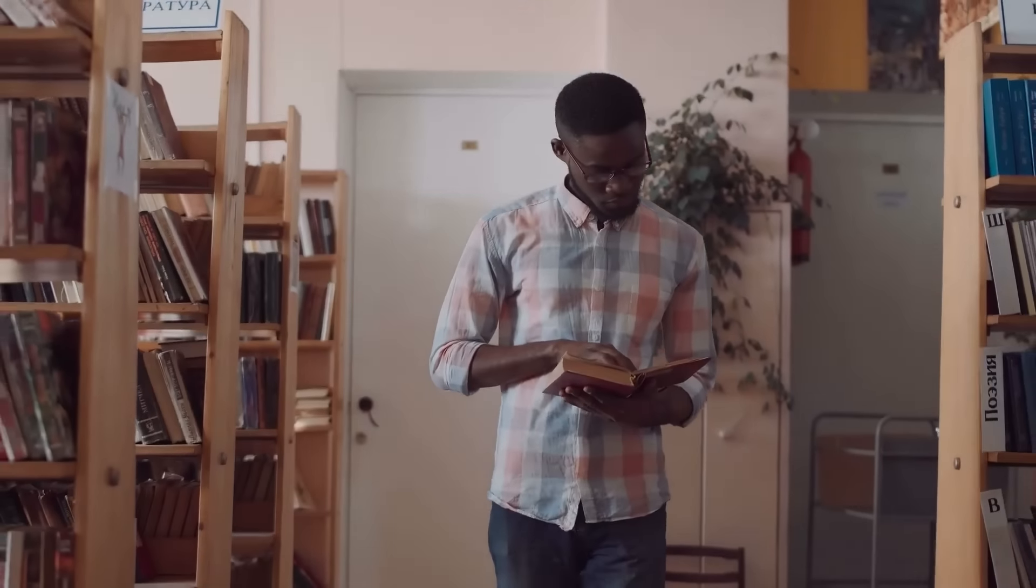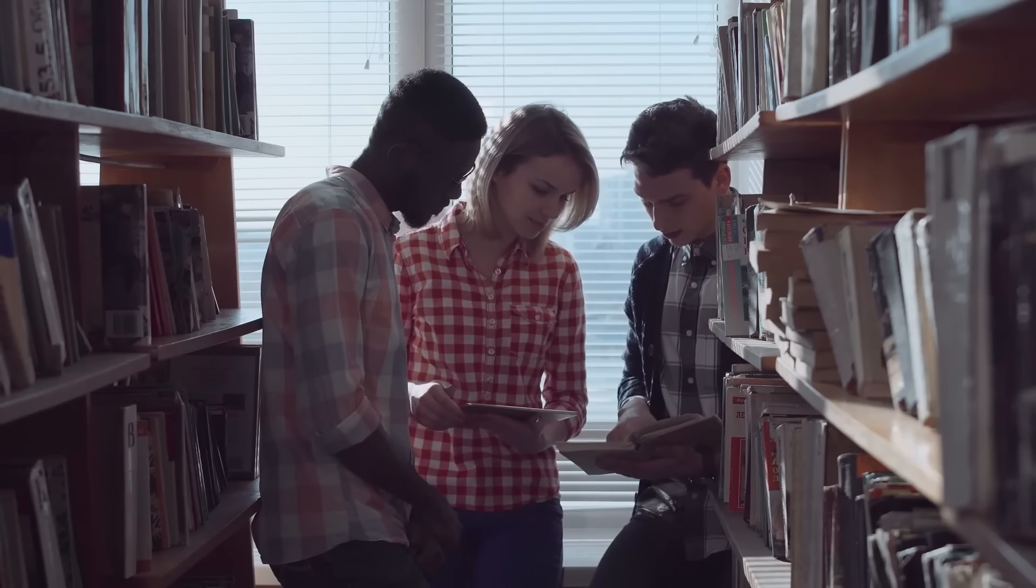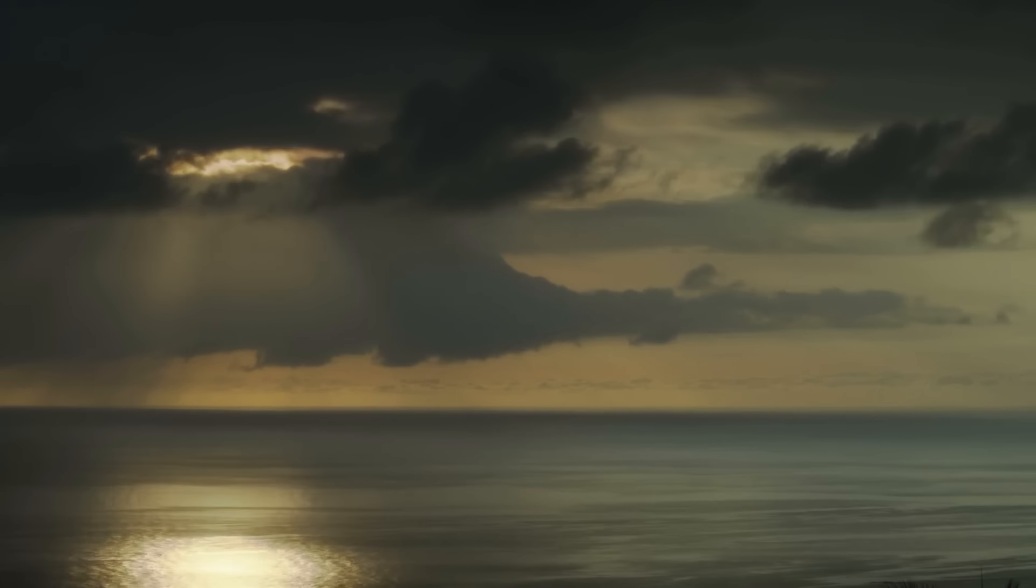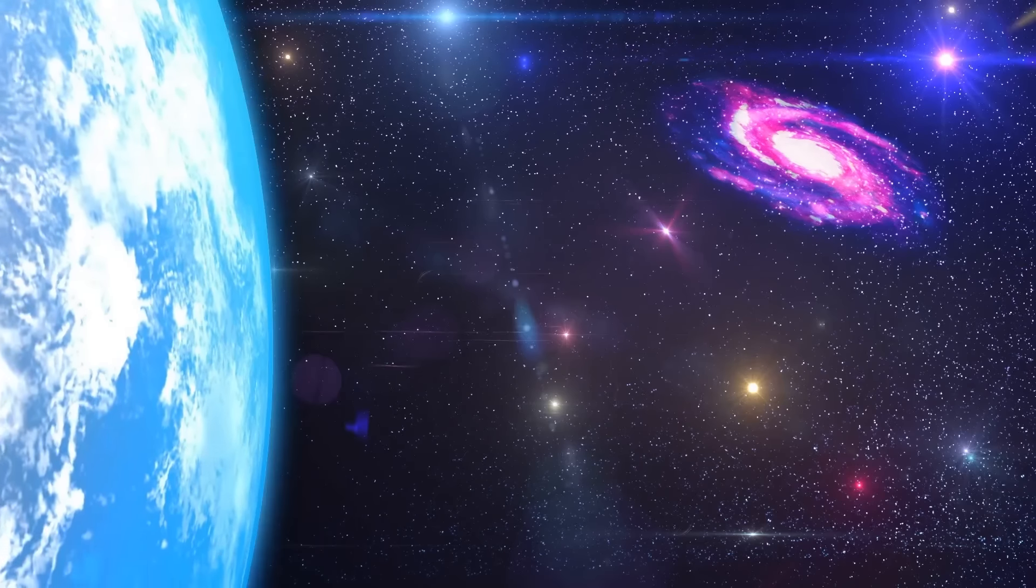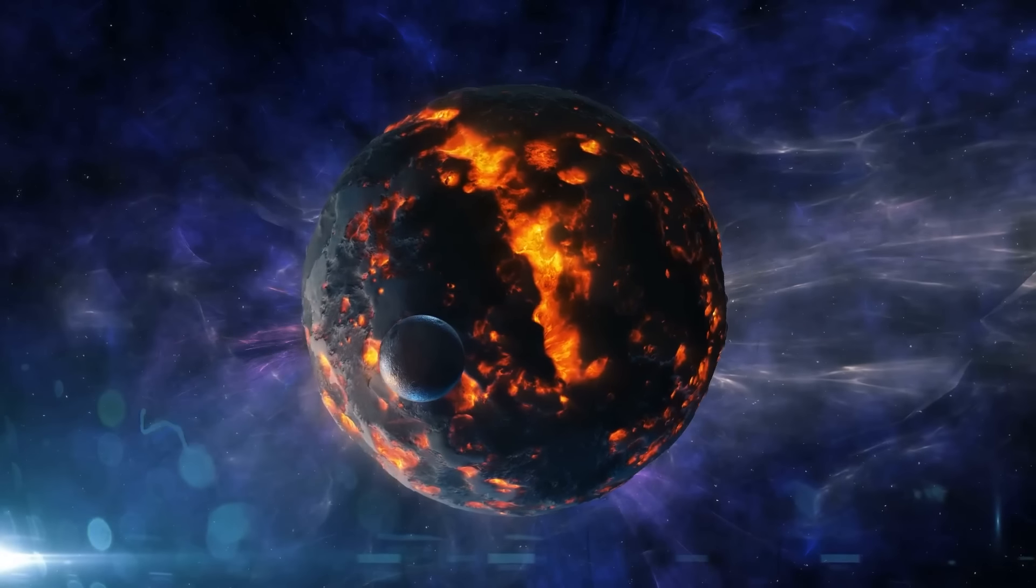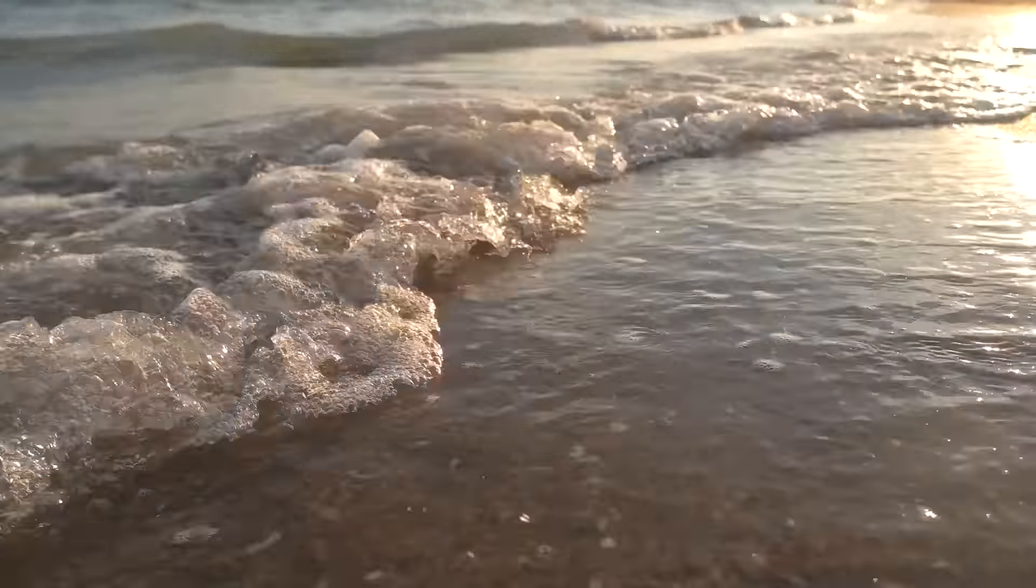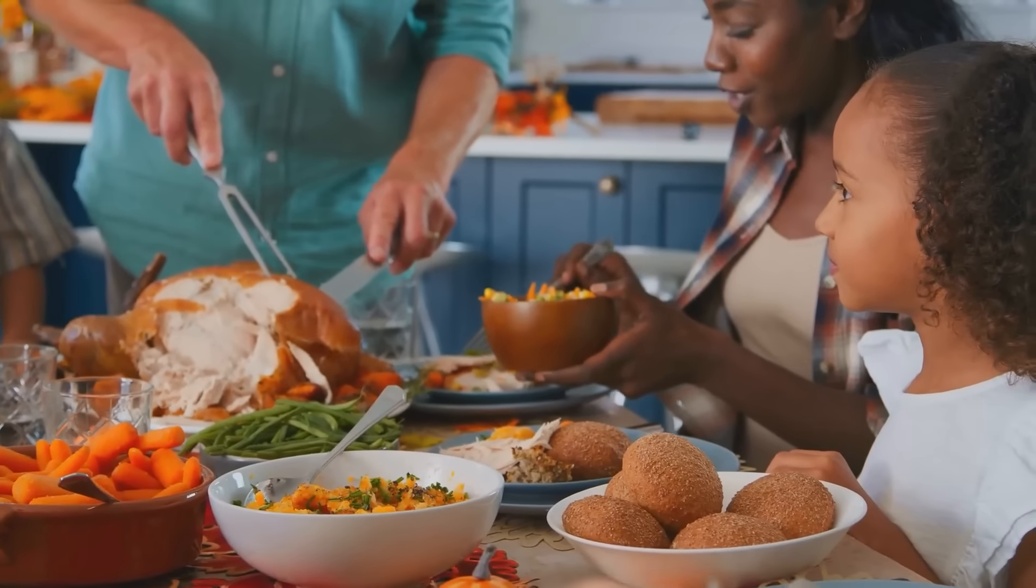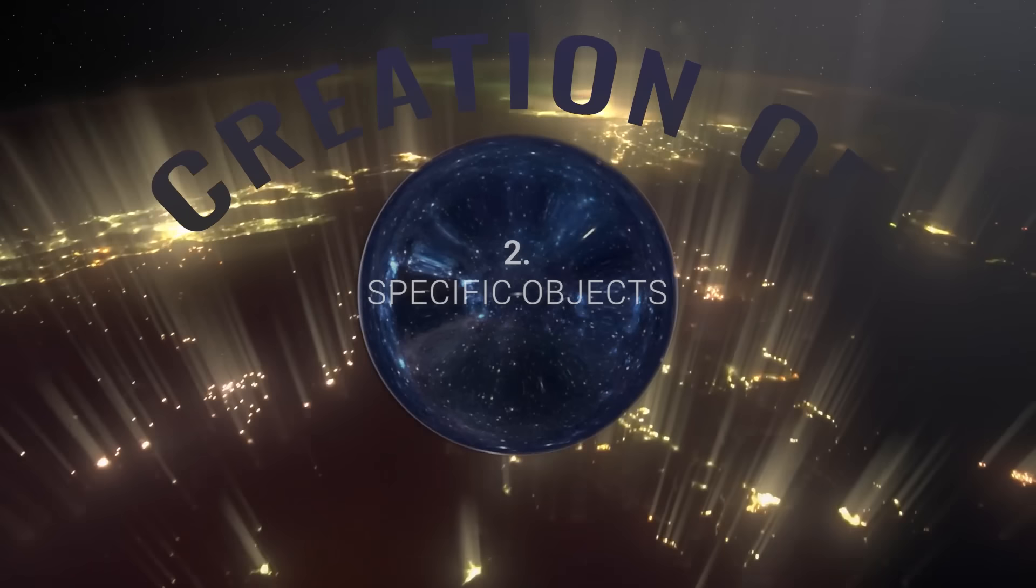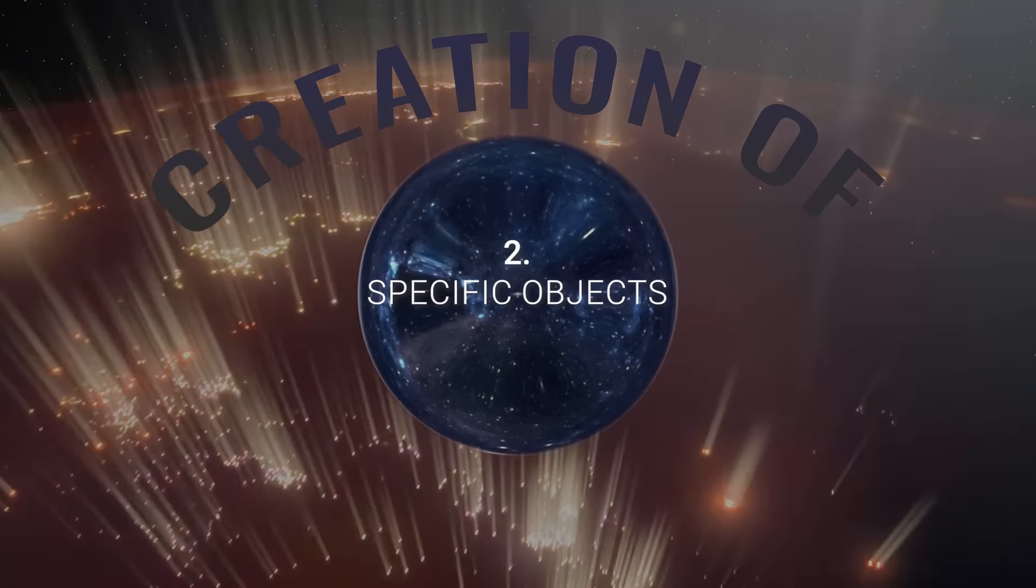Now, the second part of a typical creation story is a little meatier. The second part concerns itself with the origins of specific objects or materials. We're talking about the creation of the sky or the stars or the oceans or fire or the bits and pieces that make up creation and how they got their start. And that is something we're definitely going to talk about today.